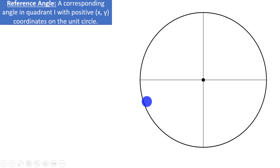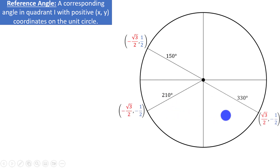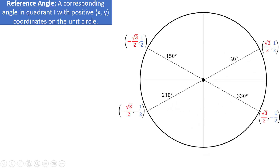For example, the angles 150 degrees, 210 degrees, and 330 degrees all have a reference angle of 30 degrees. The reason the reference angle for each of these angles is 30 degrees is because the xy coordinates are the same, except they may be either positive or negative.